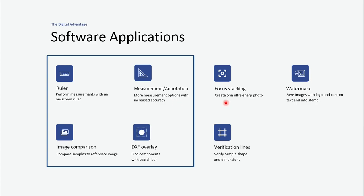We also have an application called focus stacking. What that does is — if you have an image where items are of various heights, and due to the depth of field of the system some items are in focus and some are out of focus — with focus stacking we can take a stack of separate images at different focal points and then create one perfectly in-focus image.